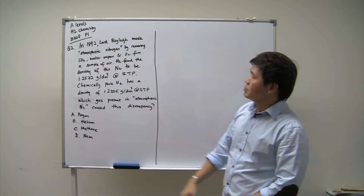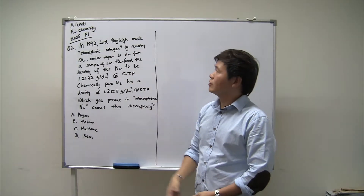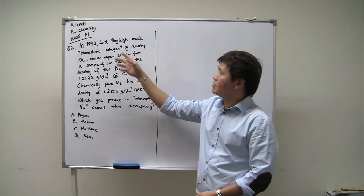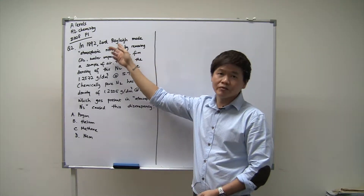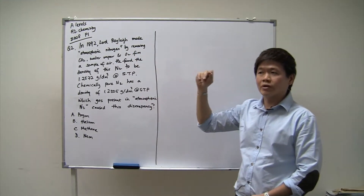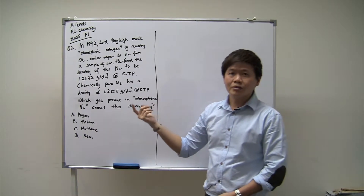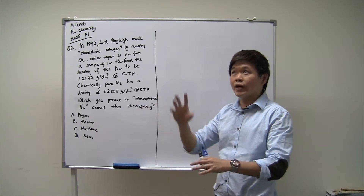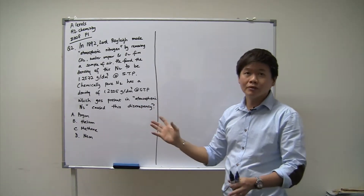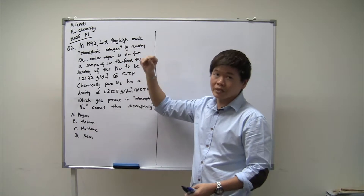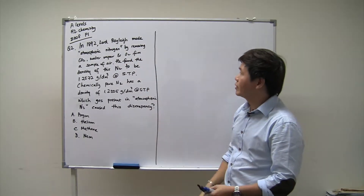The question talks about a person called Lord Rayleigh. Lord Rayleigh came up with a concept called Rayleigh Scattering, which is the idea of why the sky is blue — described by his concept called the Scattering Effect.